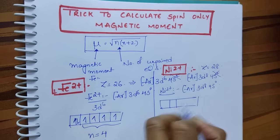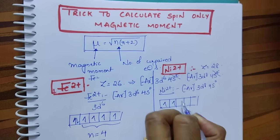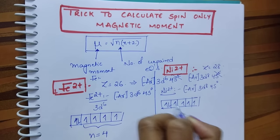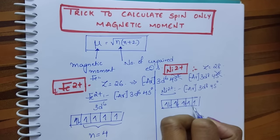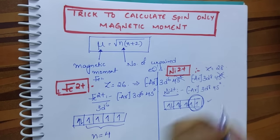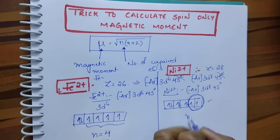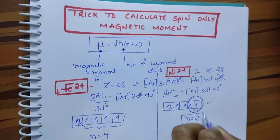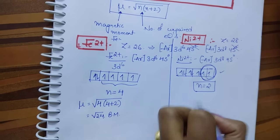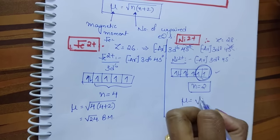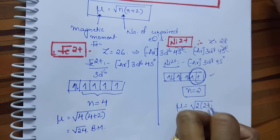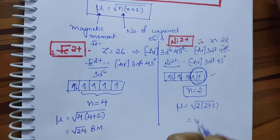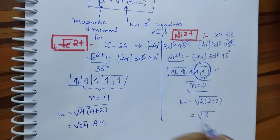Just take this d orbital and fill the electrons: 1, 2, 3, 4, 5, 6, 7, 8. Now how many unpaired electrons are here? Number of unpaired electrons is 2. Then μ equals 2 into 2 plus 2, which is 4. 2×4 is 8. Square root of 8.